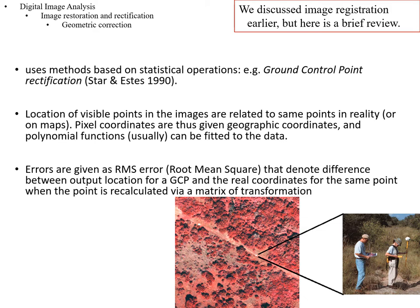We calculate an error known as root mean square (RMS) error, which shows the differences between the output locations — the calculated location for a GCP — and the real coordinates for the same point. When fitting those equations, they won't be perfect in general. You calculate a location for each pixel, relate it to where you have real GCPs, and look at the difference summarized by the root mean square, so you know how much error and how far off you are in your registration.